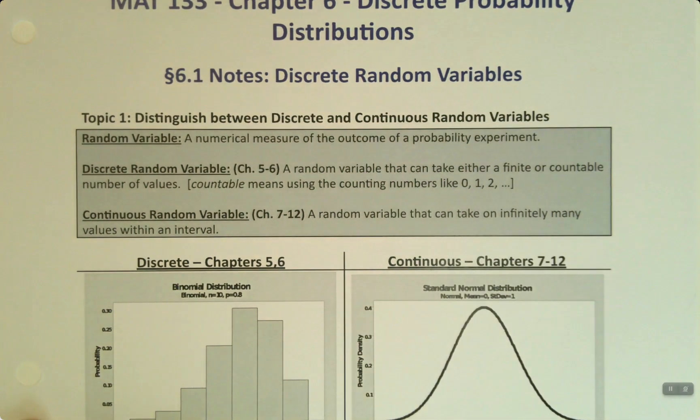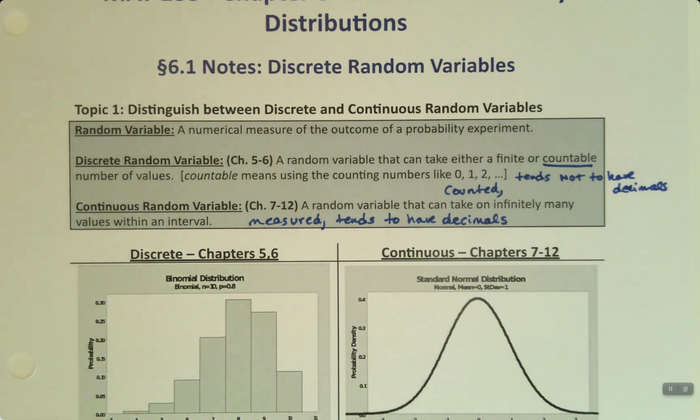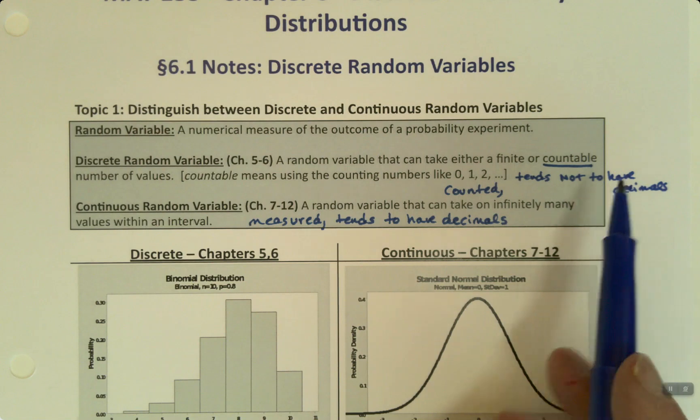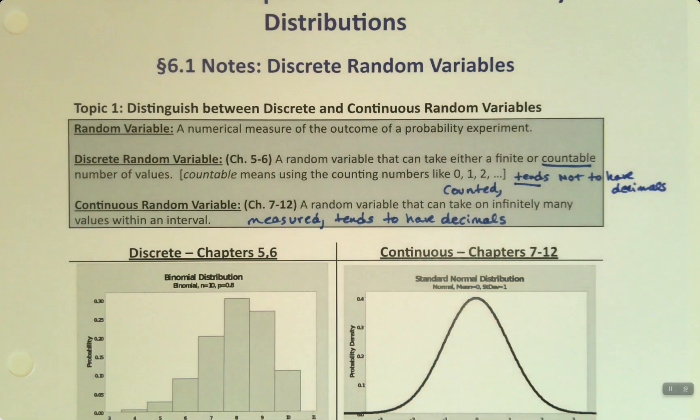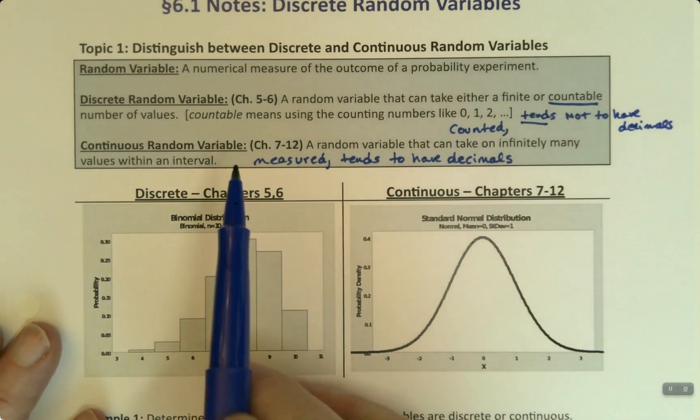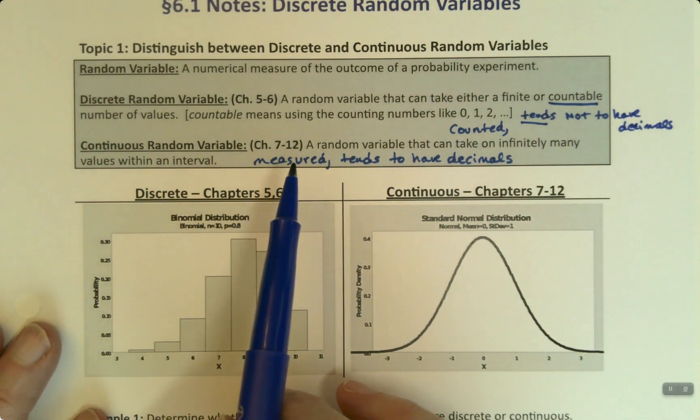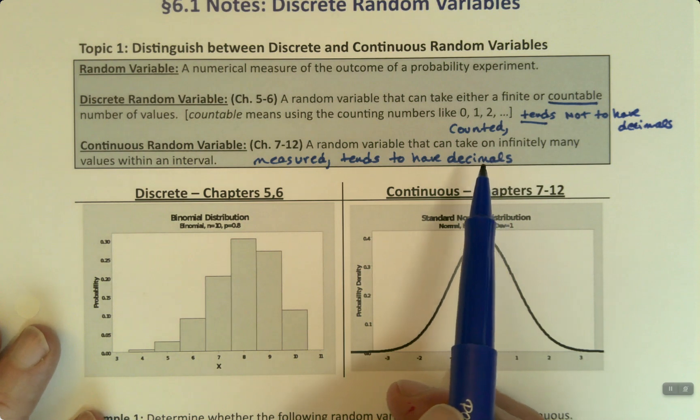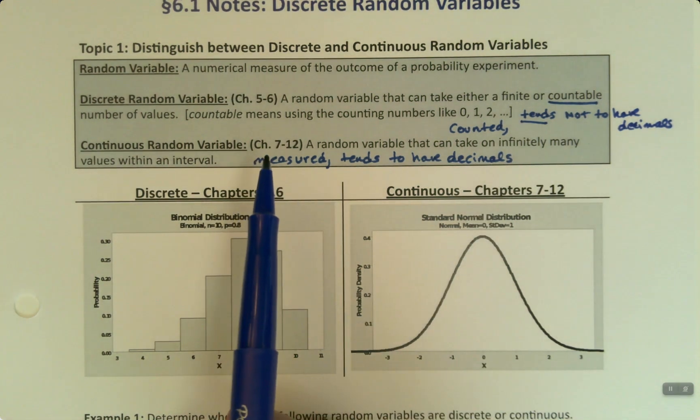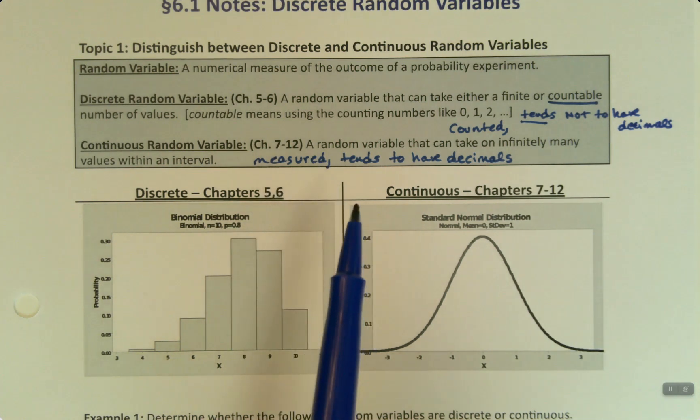Alright, so let me write down those couple notes. So, discrete variables are counted. They tend not to have decimals. Again, it's a tendency. It's not a hard rule, but it tends not to have decimals. And then, continuous variables are measured and they tend to have lots of decimals. And the thing about continuous variables is that they could always get more decimals if we just have better tools to measure it with.